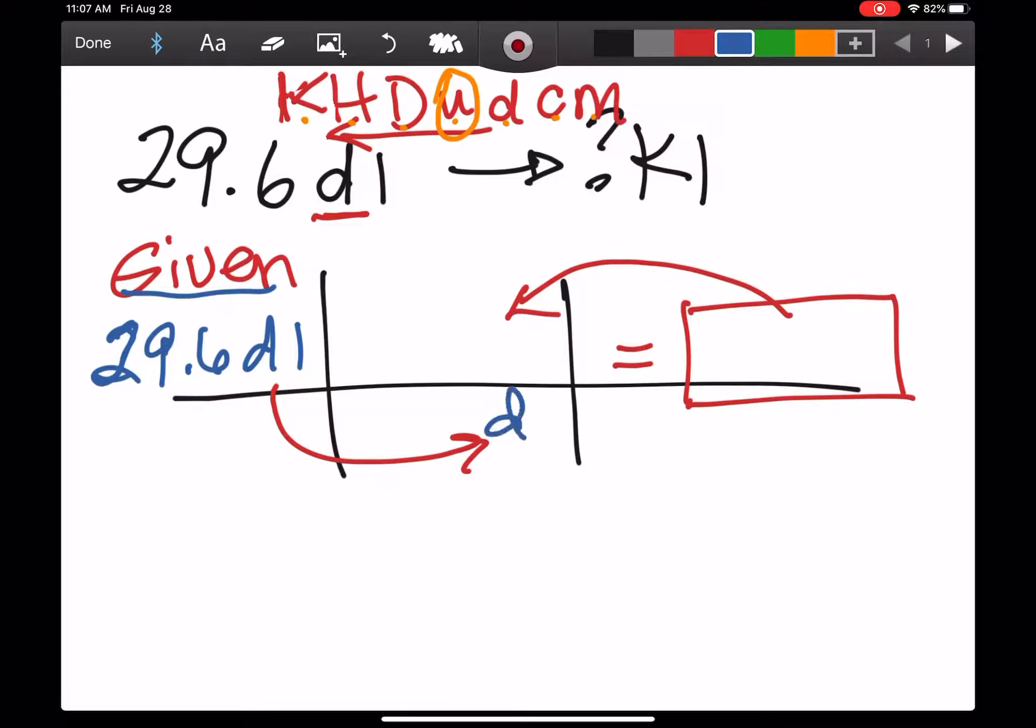First of all, we want the units of dl to be down here so they can match, and we want the units we're looking for, kiloliters, to be here. Notice what's going to happen: the units that we want to get rid of are across from each other and they're going to cancel out.